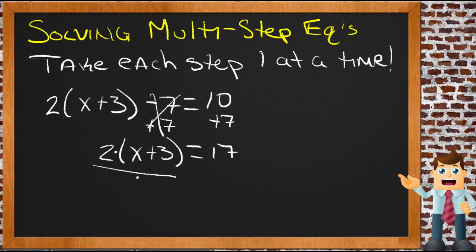If we want to undo multiplication, we need to use the opposite—that's division. So we're going to divide both sides by two. Now I have two times something divided by two. Those two things are going to cancel each other out, so I'm going to have just x + 3. Over here on the other side, I'm going to have 17 divided by 2—that's 8 and a half.